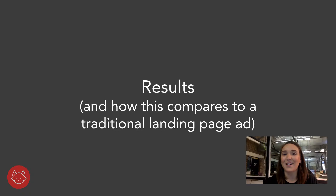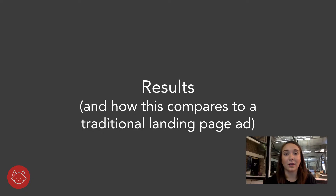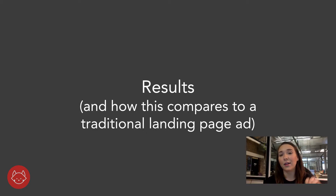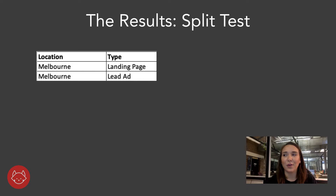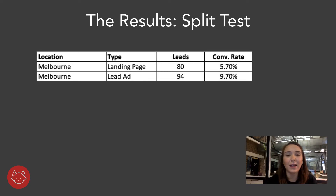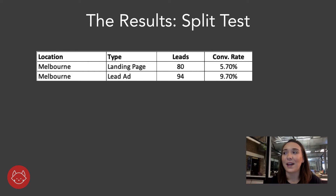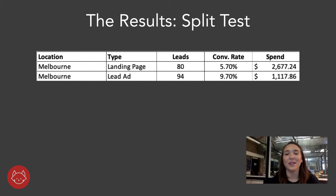Now the results from this ad are what's really exciting. We split tested between a Facebook lead ad and a traditional landing page ad — same creative, same audience, same location targeting, same ad — the only difference was the ad type. One you click through and convert on a Facebook lead ad; the other you click through off the Facebook app to a landing page and fill out a form there. What we found immediately was the landing page ad converted 80 leads with a 5.7% conversion rate, while the lead ad achieved 94 leads with a 9.7% conversion rate. But most exciting — the spend on the landing page ad was over double the spend on the lead ad, with fewer conversions.